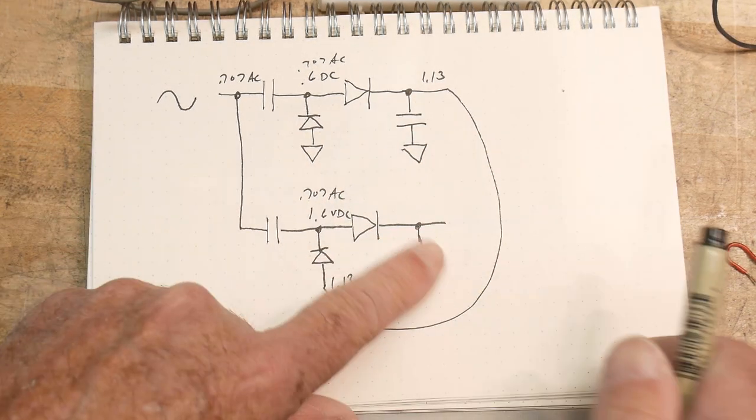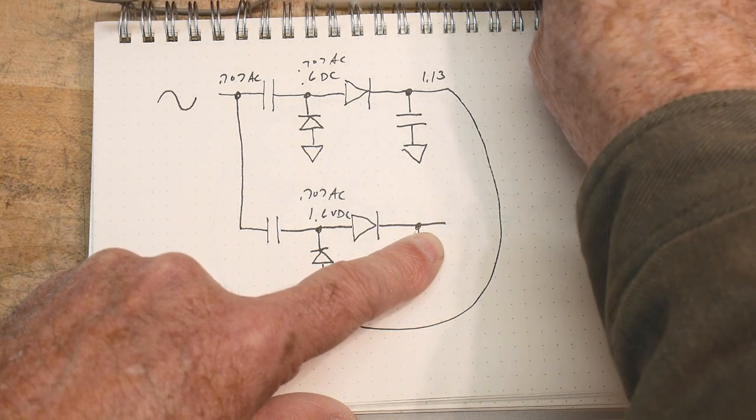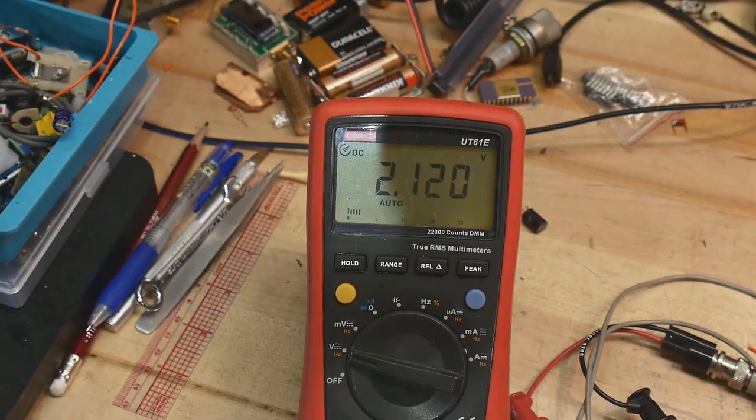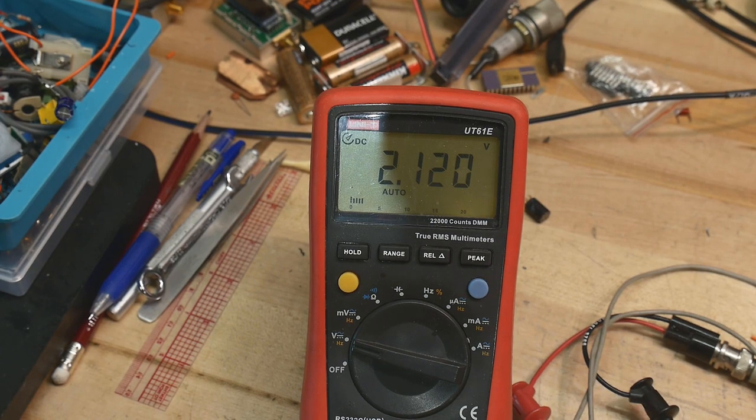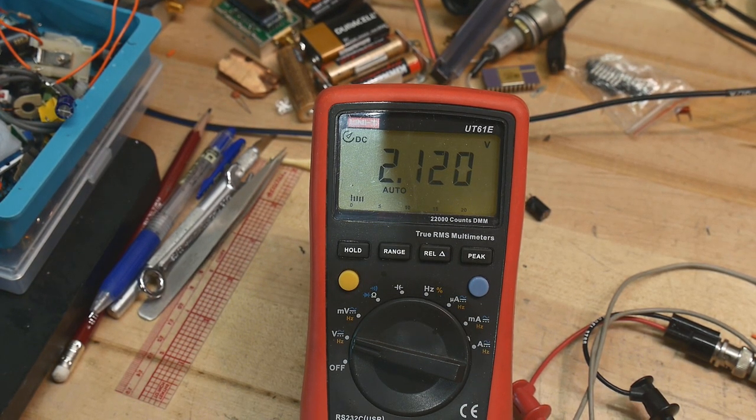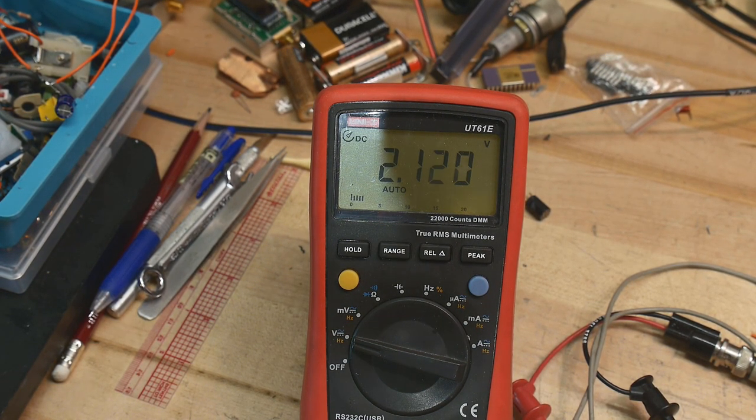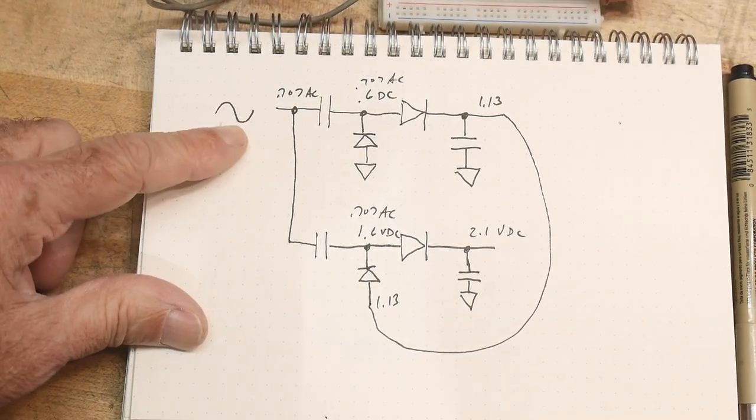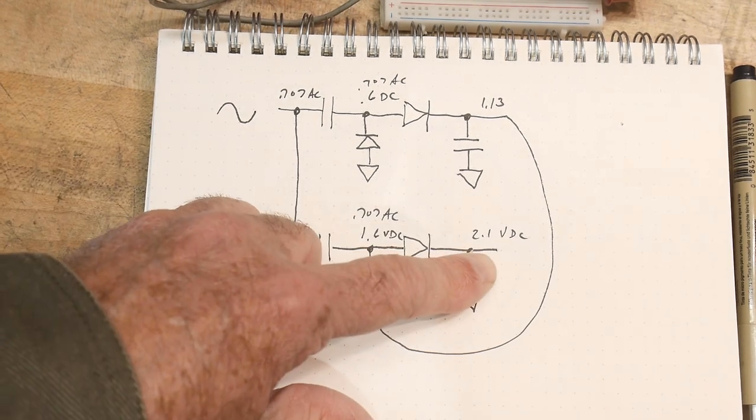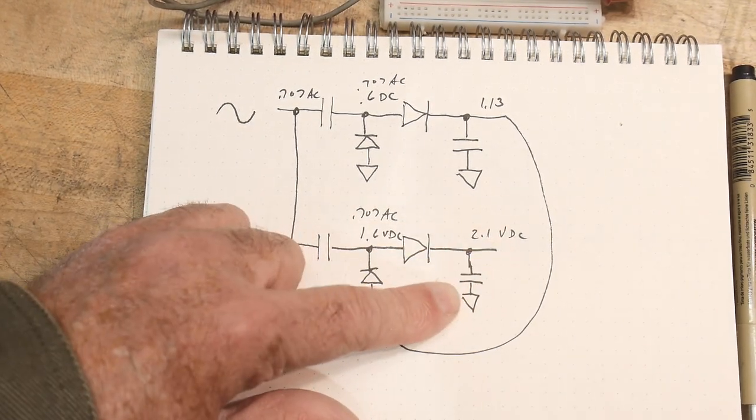All right, so what do you think we're going to get out here? So let's move the voltmeter over to here, and we get 2.1. 2.1 volts DC. So what did we just make? We made a voltage doubler circuit. We started out with 1 volt peak to peak, and we ended up with 2 volts DC. That's pretty cool.